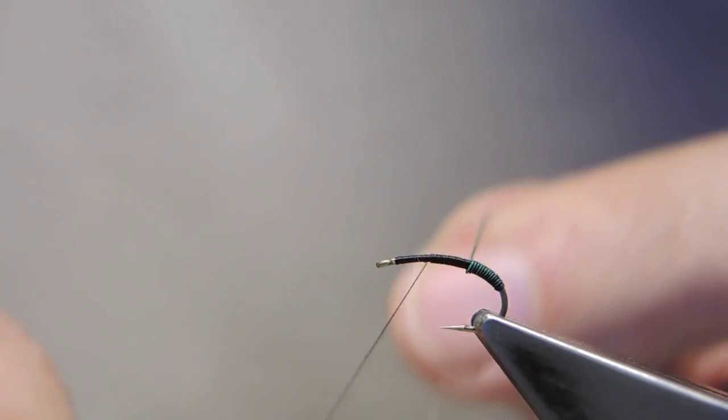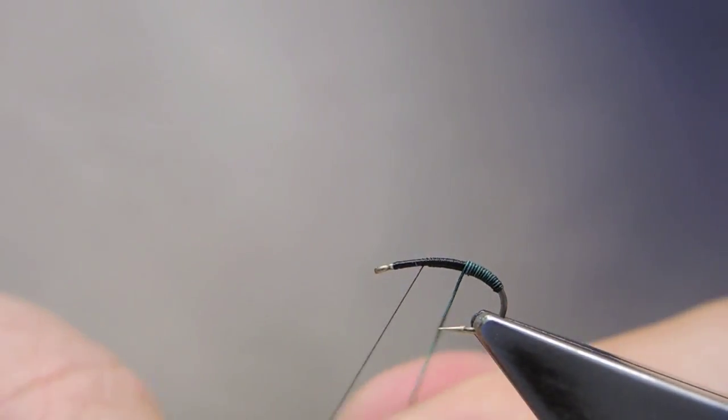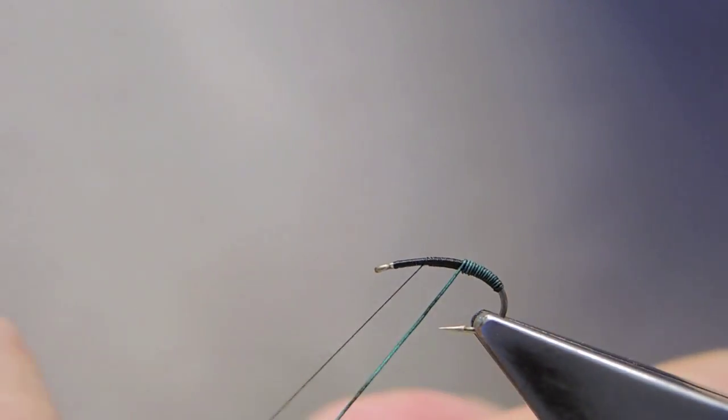The natural taper of the quill will shape the abdomen in a smooth increase in diameter.